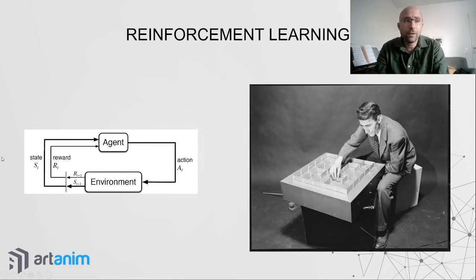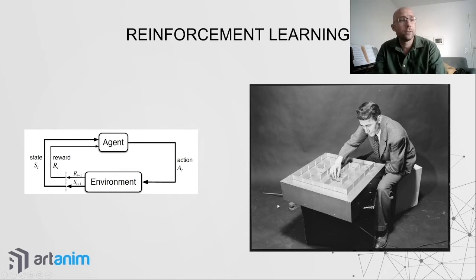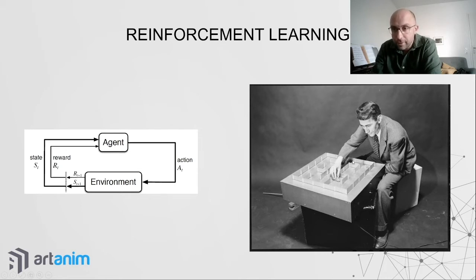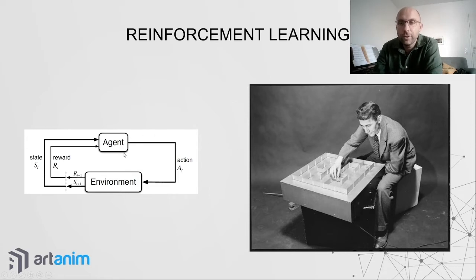Maybe the first implementation into a robotic system was a machine invented by Shannon — also the father of information theory — which was a robotic mouse that learned to find the exit of a labyrinth in any configuration. You could move the walls, and by trial and error, the mouse would progressively find its way out.